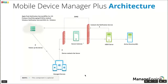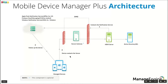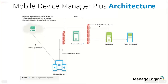Moving on to the architecture — MDM has three main components: the MDM server, mobile devices, and the notification services. These notification services are platform dependent. We have Apple Push Notification Service (APNS) for Apple devices, Firebase Cloud Messaging (FCM) for Android devices, and Windows Notification Services (WNS) for Windows devices. These notification services stay in contact with the devices all the time. MDM leverages this to wake up the devices, and the devices in turn contact MDM for commands to be executed. Since managed devices can also stay outside your corporate network, you need to ensure that your server is always reachable by mapping your internal IP to a public IP.